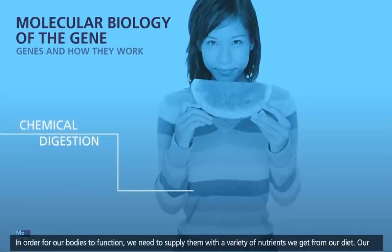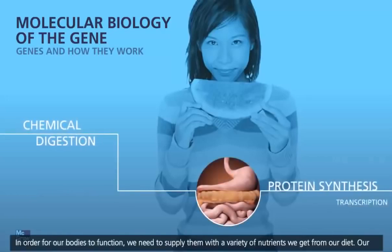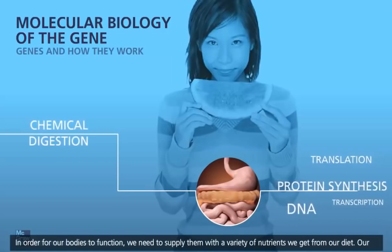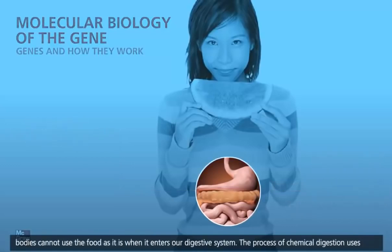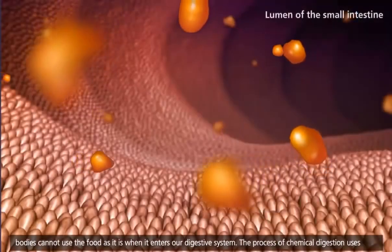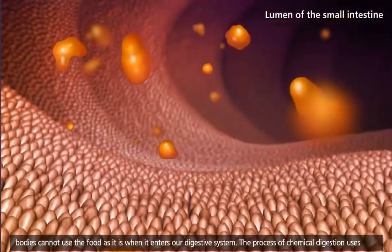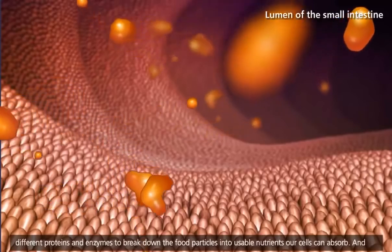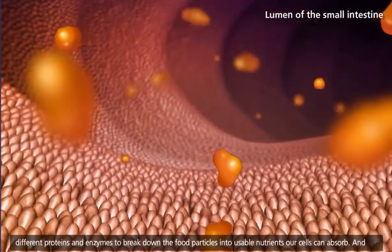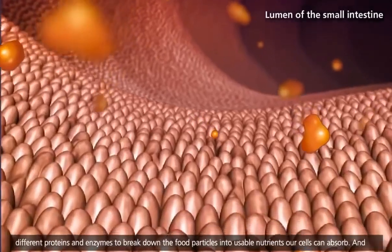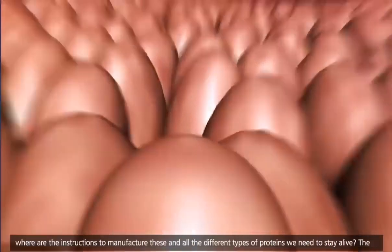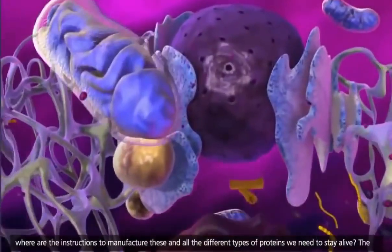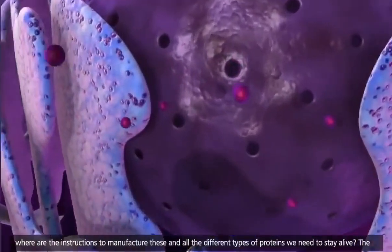In order for our bodies to function, we need to supply them with a variety of nutrients we get from our diet. Our bodies cannot use the food as it is when it enters our digestive system. The process of chemical digestion uses different proteins and enzymes to break down the food particles into usable nutrients our cells can absorb. And where are the instructions to manufacture these and all the different types of proteins we need to stay alive?